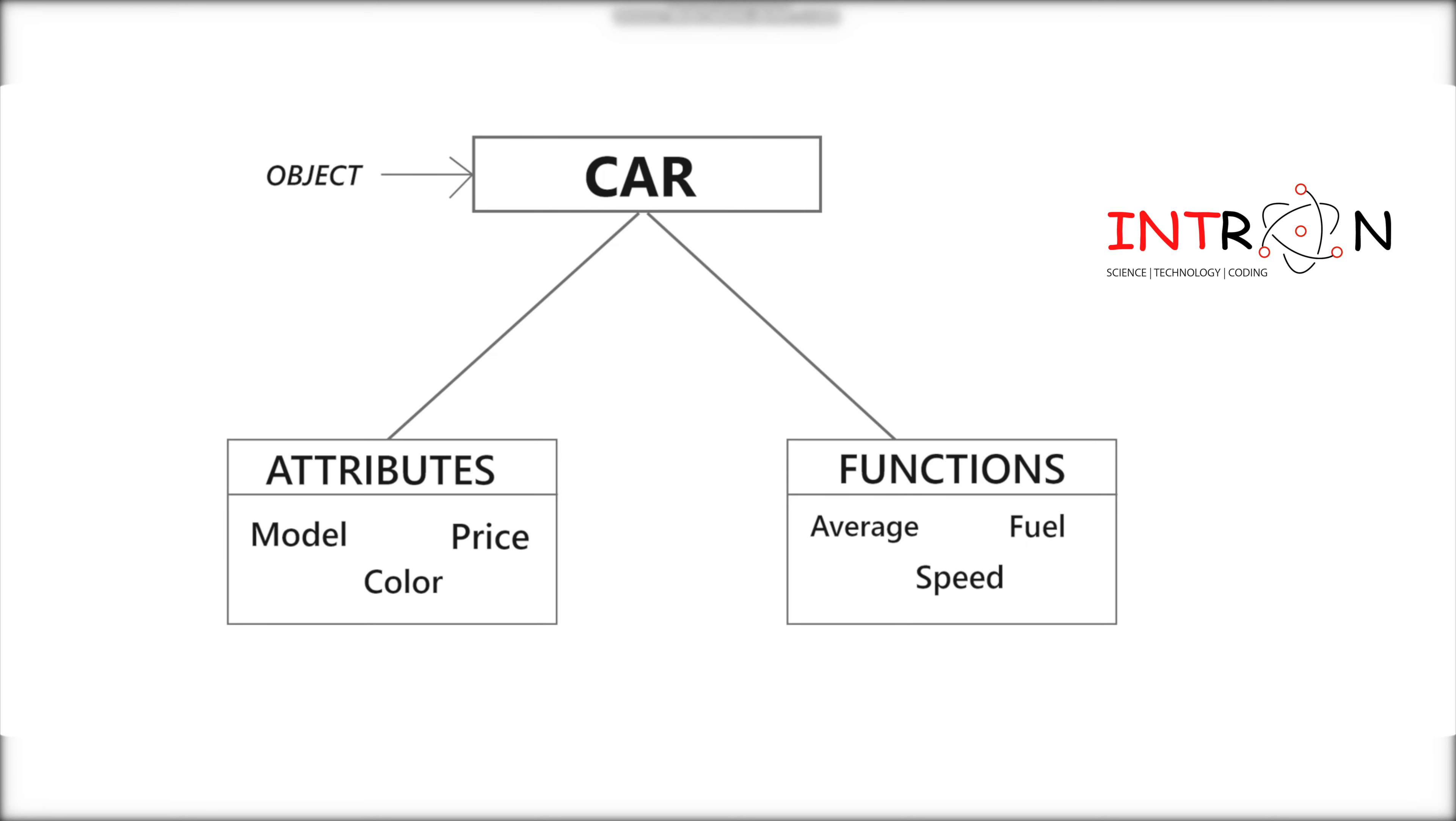Here, car is the class and wheel, speed limit, mileage are its properties. In this, as we know, car is our main class. Here we are considering one object. This car can be of any company, so I am considering it now as a Toyota car. Toyota car is my object.